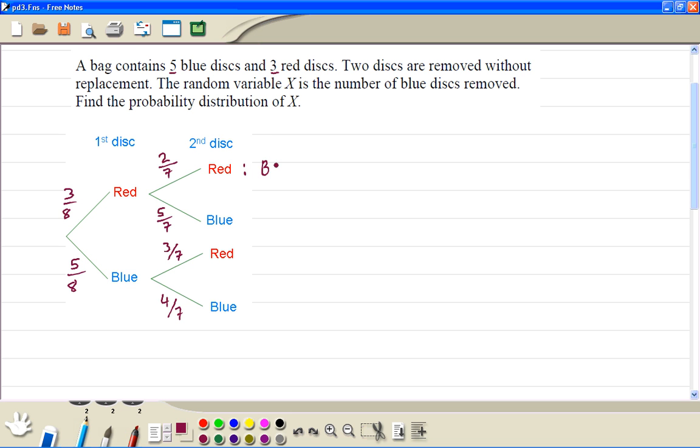So we work out the probabilities now. Here is red then red again. 3 divided by 8 times 2 divided by 7. So this is 6 divided by 56. And this is 0 blue. Then we work out the probability. The first one red then the second one blue is 3 divided by 8 times 5 divided by 7. This is also 15 out of 56. This is 1 blue.